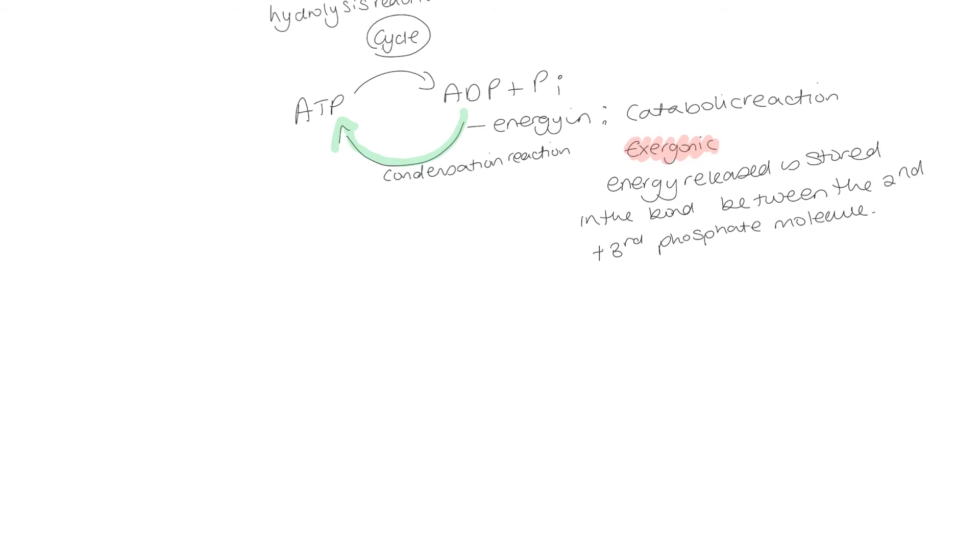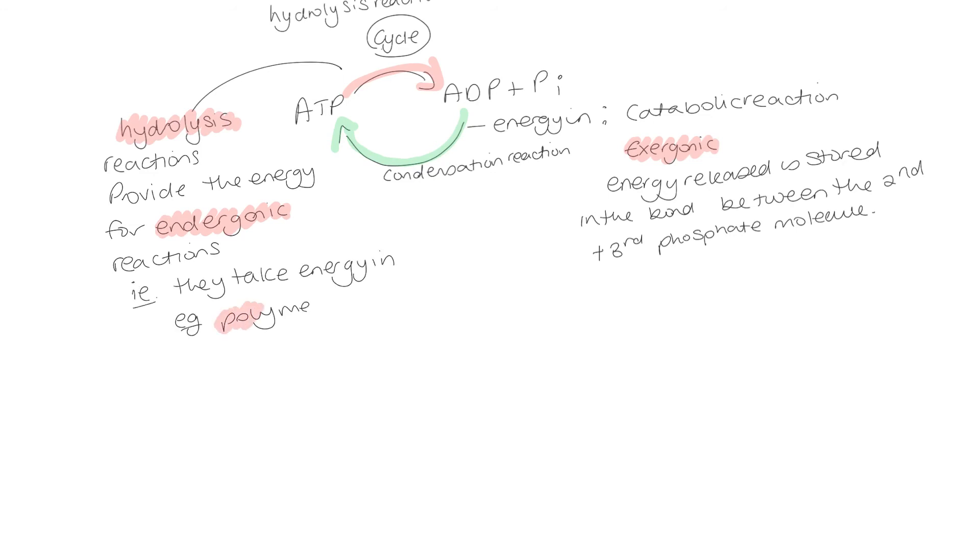When we release energy from ATP, this is a hydrolysis reaction, and it provides the energy for cellular processes that are endergonic, i.e. they're going to take energy in. So these are all energy transfers, transfer from glucose to ADP and inorganic phosphate to make ATP, and then ATP to other molecules to allow other metabolic reactions to take place.